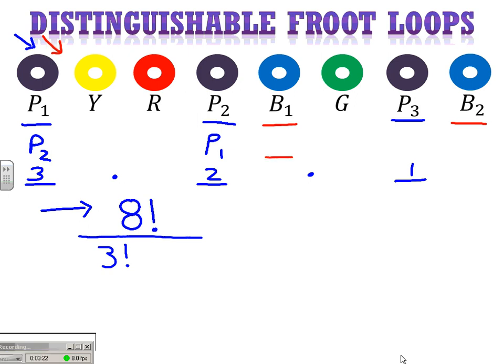Well, how many blue fruit loops could I place here? And then there, I have two choices times one choice, two times one, two, and those two are factored in, again, to this 8!. For every single distinguishable arrangement, we could rearrange the blues two times one way.